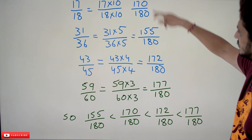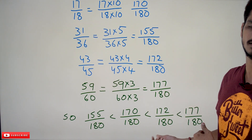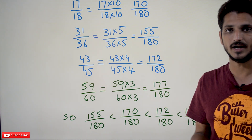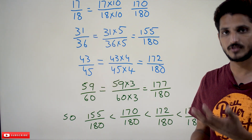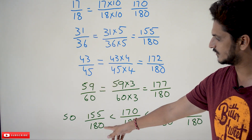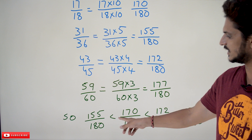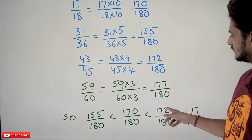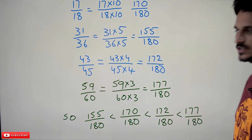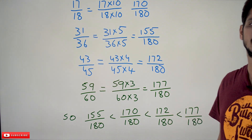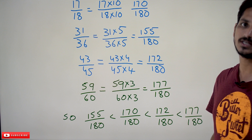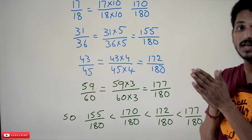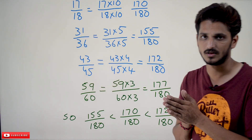Now arrange them in ascending order. The ascending order of the fractions is: 155/180 < 170/180 < 172/180 < 177/180. This is the easy way to arrange fractions in ascending order using LCM.